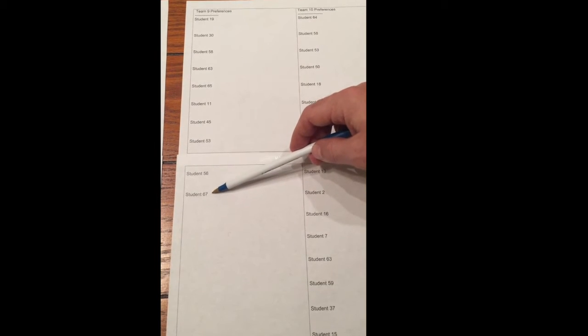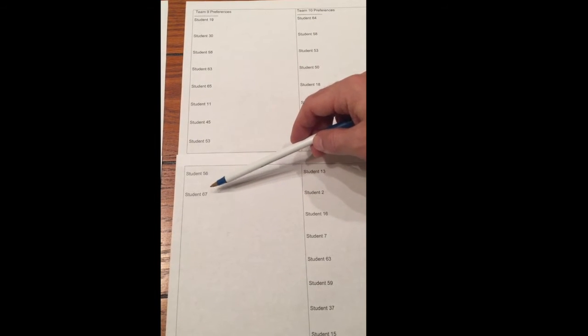For this example, Team 9 and Team 10. For Team 9, you can see that Student 19 is their highest ranked preferred student, all the way down to Student 67, who is their lowest ranked preferred student.